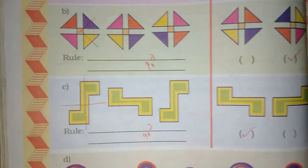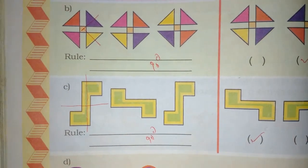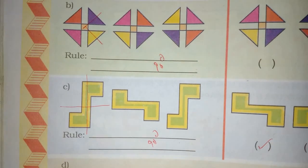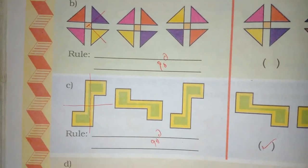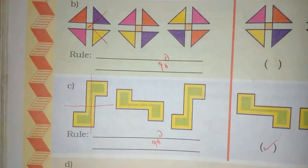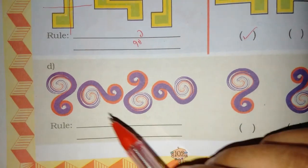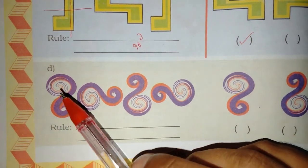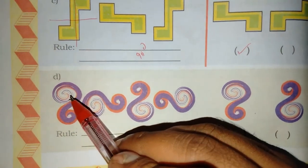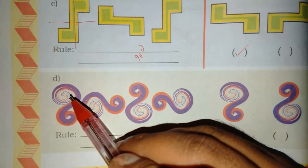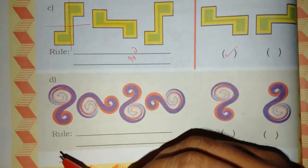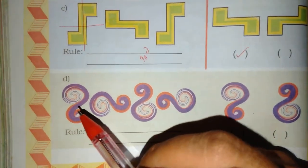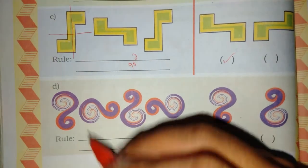How many degrees did it go? 360. How many? 360. Look at these patterns. Look at the top. Where did it go? 90 degrees — 90 degrees even went to the ground. Now, see — this is clockwise. Yes, that is clockwise.